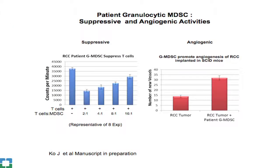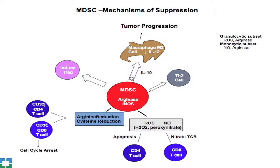MDSCs are immunosuppressive — they suppress T cell proliferation in a dose-dependent manner. They also promote angiogenesis: injecting granulocytic MDSCs alongside human tumors into NOD-SCID mice markedly increases the vascular component. Mechanistically, MDSCs produce arginase and nitric oxide, depleting key amino acids and causing T cell dysfunction including loss of the zeta chain. They also produce reactive oxygen species and can nitrate T cell receptors, causing further dysfunction.